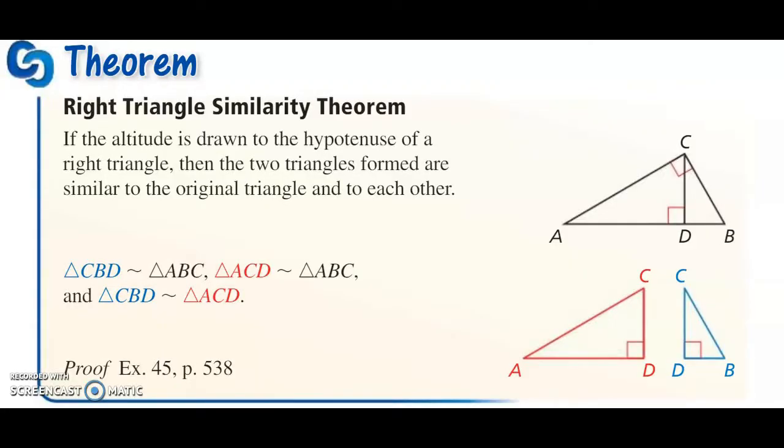We'll be going over 9.3 Math 2, the Right Triangle Similarity Theorem. Let's break down what this is, where we see it, and how it's useful. First, there's a big triangle on the outside, ABC, and then the line on the inside, CD, is what we call the altitude.